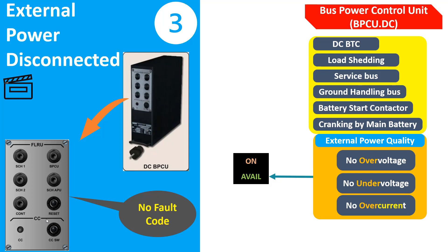I then checked the external power with another aircraft — no problem, it was okay on the other aircraft. But I suspected this Bus Power Control Unit. That is why I removed this DC BPCU and installed it on another aircraft with the same external power unit, and again our aircraft had a different result.